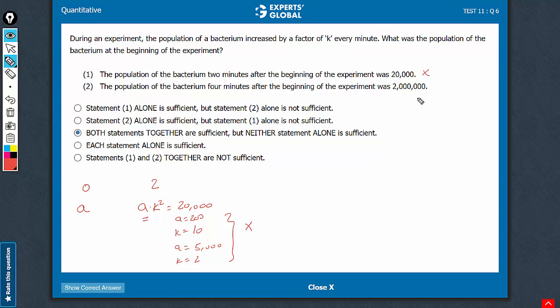Look at statement 2 now. 4 minutes later, it is 2,000,000. So at 4 minutes, a into k raise to power 4 is 2,000,000. Again, with the same concept, two variables, one equation.